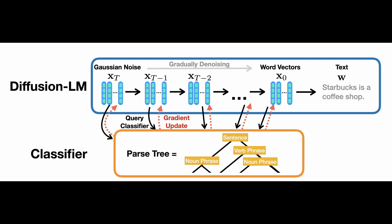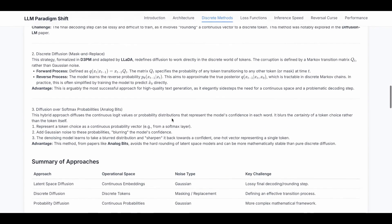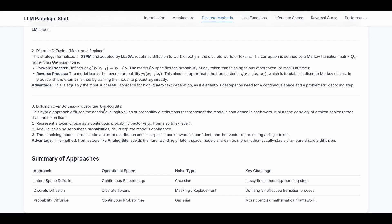The challenge for this is the final decoding step can be lossy and difficult to train since it involves rounding a continuous vector to a discrete token. This method was explored by diffusion LM paper. There's a third hybrid approach which is explored in the analog bits paper.